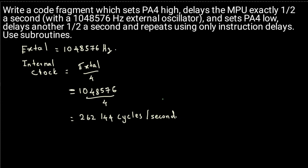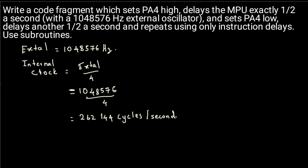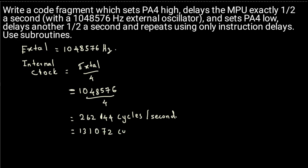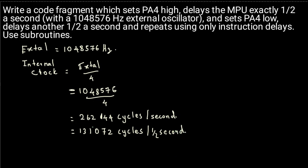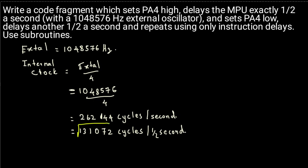According to the question, we have to find the cycles for half a second, so this number has to be divided by two. That gives us 131,072 cycles per half a second. This is the number of cycles we need to achieve.